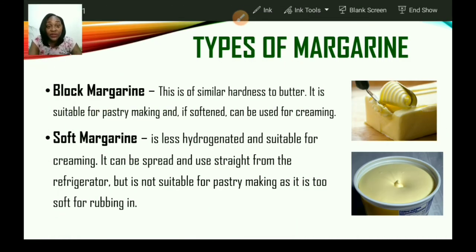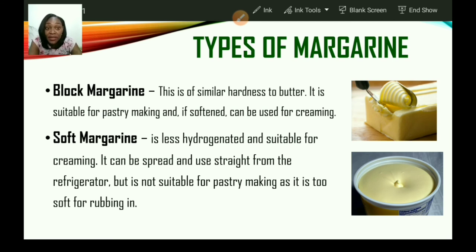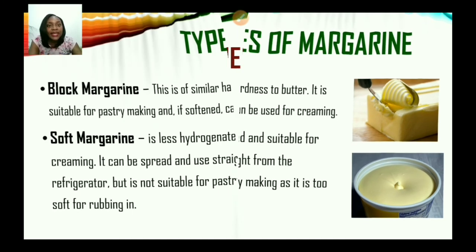Now let us look at types of margarine. The two types are block margarine and soft margarine. Block margarine is of similar hardness to butter — it is suitable for pastry making and if softened can be used for creaming. Soft margarine is less hydrogenated and suitable for creaming. It can be spread and used straight from the refrigerator, but it is not suitable for pastry making as it is too soft for rubbing in.